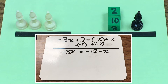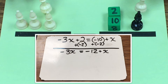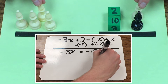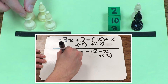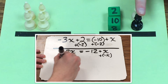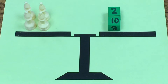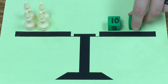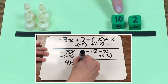My next step is to eliminate this black pawn. The way I can do that is go back to my legal move of adding the same thing to both sides. I'm going to take a white pawn and add one to both sides. Once I do that, I've created a pair of zero that I can remove, and I'm left with the opposite of 4x equals negative 12.